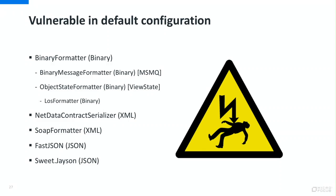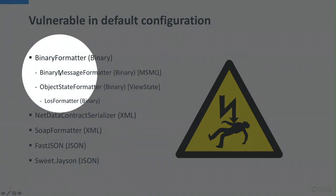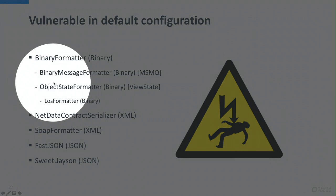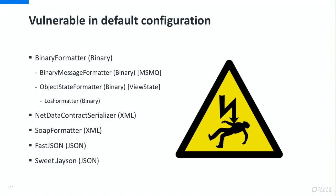James presented a couple of formatters that are vulnerable in their default configuration: binary formatter and .NET data contract serializer. But there are more. These are vulnerable in their default configuration and should never be used with untrusted data. They include binary formatter — which is also used internally by other serializers, for example the binary message formatter used by Microsoft Message Queue System. Same thing with the object state formatter, used by ASP.NET view state — if you can change the view state and survive the HMAC verification, that will also lead to remote code execution.